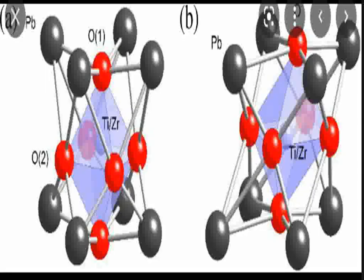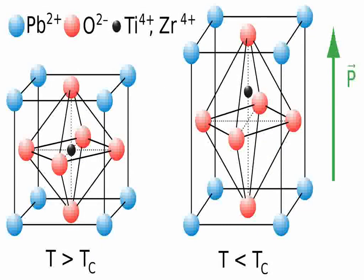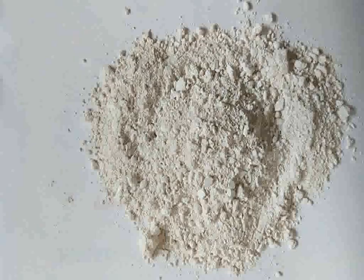Breakdown may occur under constant voltage stress after minutes to hours, depending on voltage and temperature, so its dielectric strength depends on the time scale over which it is measured. Other formulations have dielectric strengths measured in the 8 to 16 MV/m range.